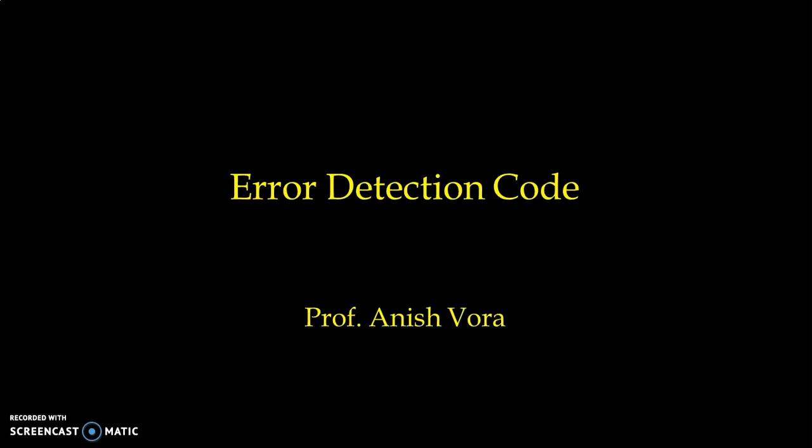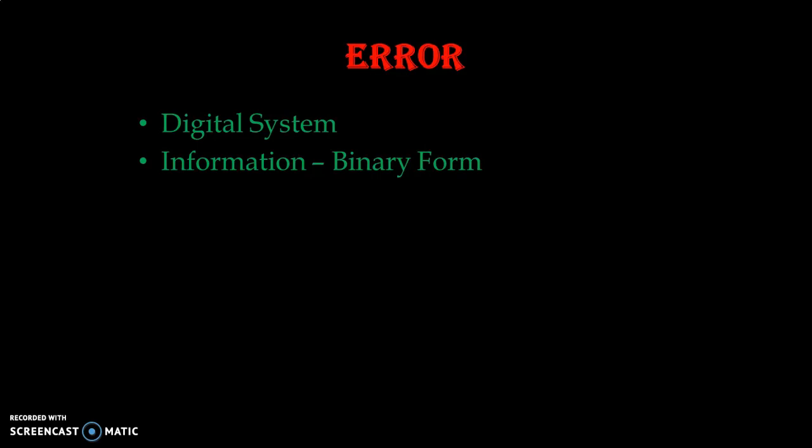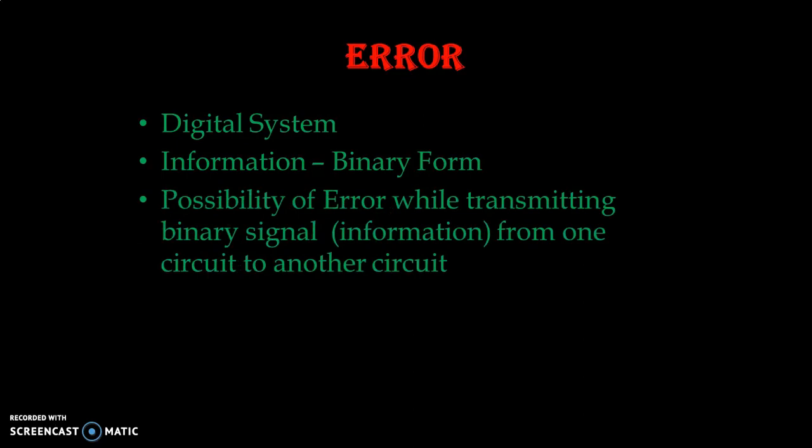Before we start our error detection code, let us see what exactly we mean by error. We have digital systems, and in digital systems all the information is stored in binary form, meaning all the information is either in zero or in one form. Sometimes it may be possible that we have to transmit or transfer information from one circuit to another circuit.